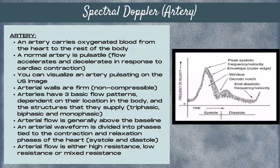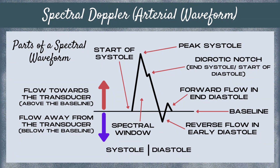Arterial flow is also either high resistance, low resistance, or mixed resistance. Let's explore a spectral Doppler arterial waveform. At the start of systole there's a sharp upstroke until you reach peak systolic flow, and then you enter the downslope. On the downslope there's a dicrotic notch, and this is the end of systole and the start of diastole. The downslope continues until it goes below the baseline, which represents a reversal of flow in early diastole.